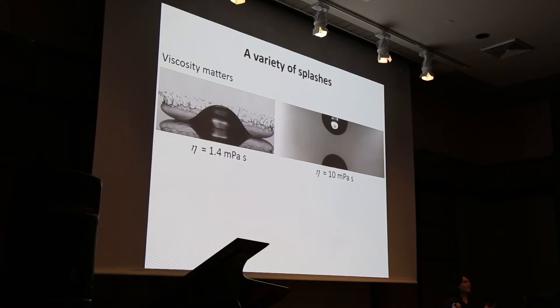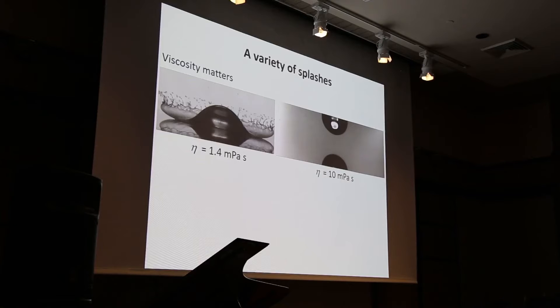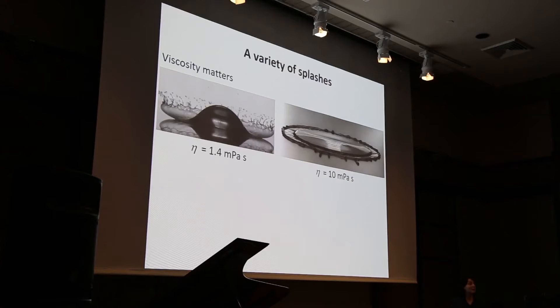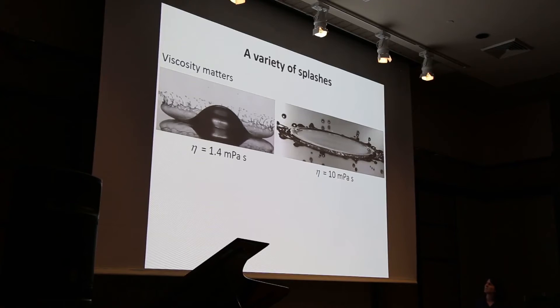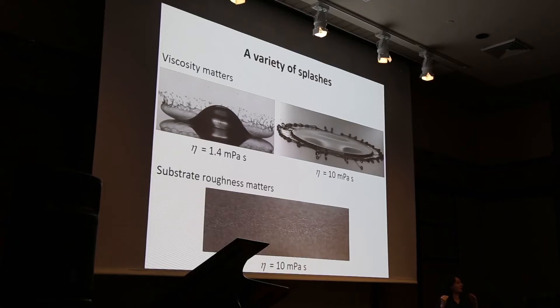The details of how exactly this splash looks depend on quite a few parameters. Viscosity is important here as well — a drop of honey is not going to splash the same way as a drop of water. Here I show you a drop of somewhat higher viscosity, about 10 times the viscosity of water. You see it looks quite different, but again we have this thin sheet which eventually breaks up into droplets. Viscosity matters, but it's also important which substrate the drop falls on. A drop looks very different if it hits a somewhat rough substrate.